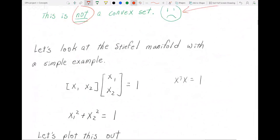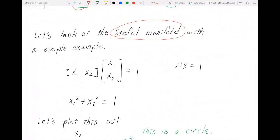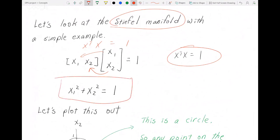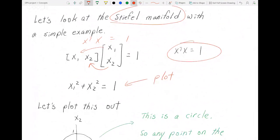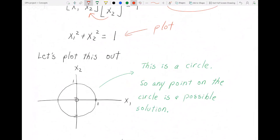If we look at this Stiefel manifold, this orthogonality constraint - let's pick a very simple example. We have x transpose x equals 1. If we multiply this out, we get something like this. If we plot this, we essentially get a circle. Anything on this circle is a possible solution - not what's inside or outside. It has to be on the circle.